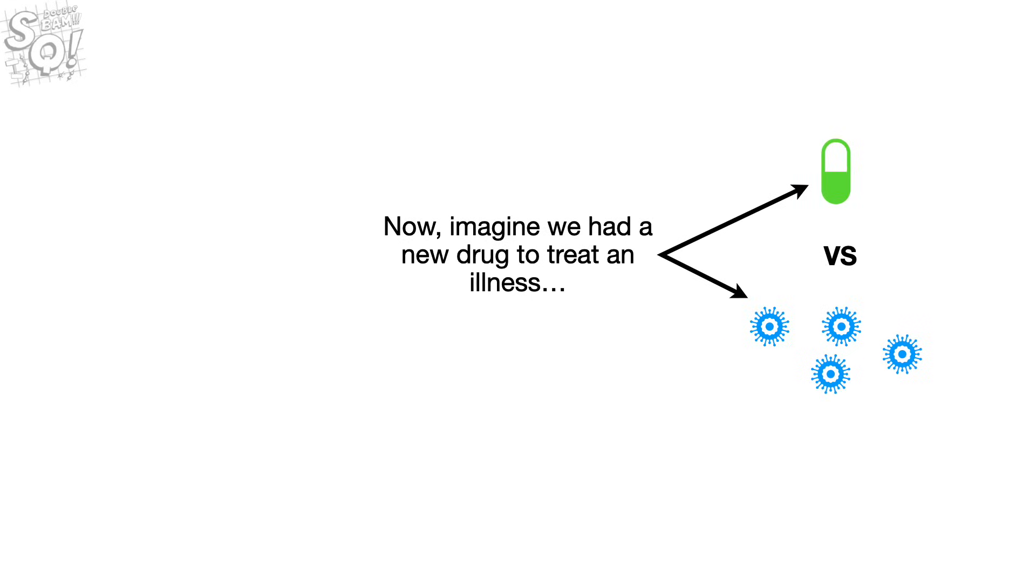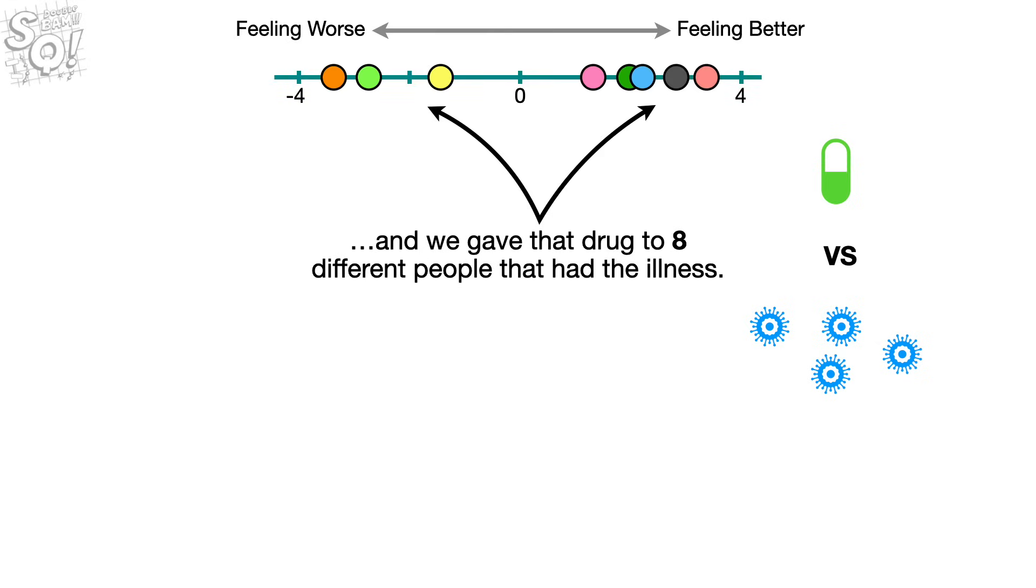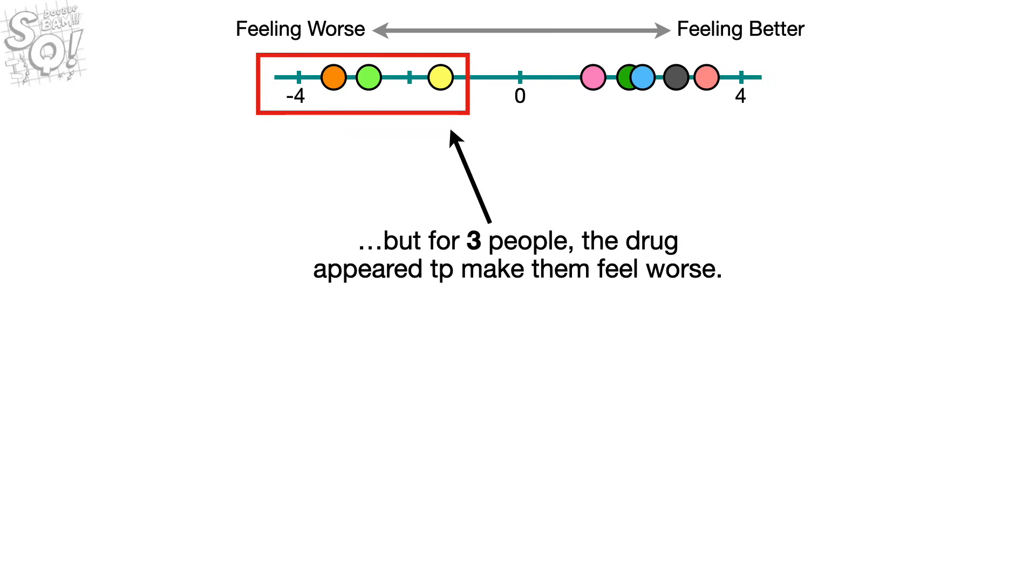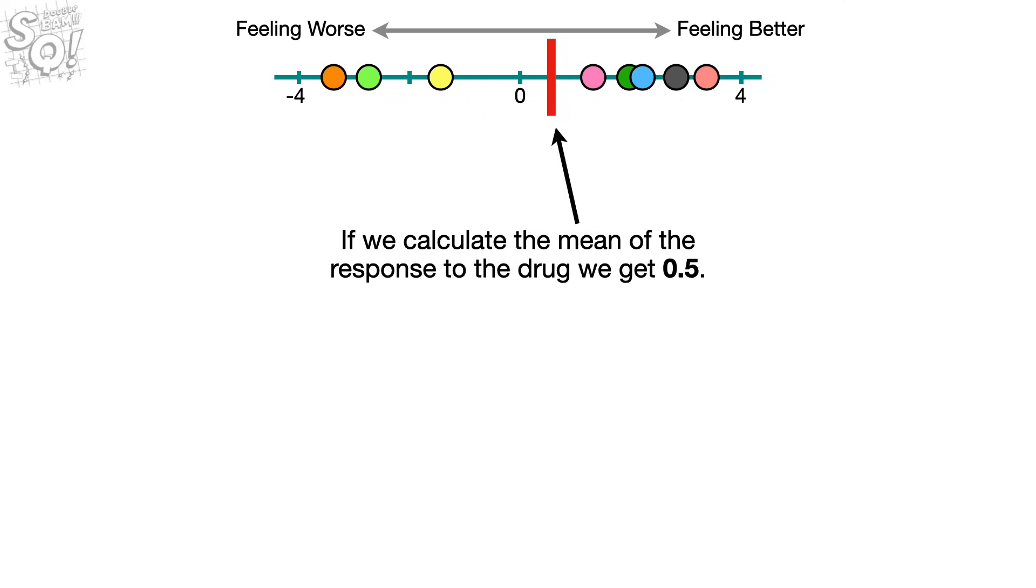Now, imagine we had a new drug to treat an illness. And we gave that drug to eight different people that had the illness. For five of these people, the drug appeared to help them feel better. But for three people, the drug appeared to make them feel worse. If we calculate the mean of the response to the drug, we get 0.5.